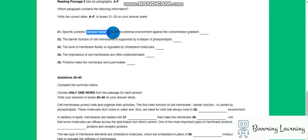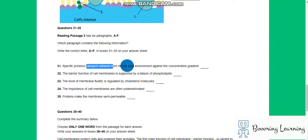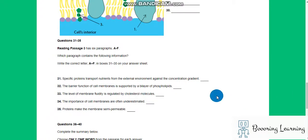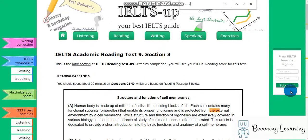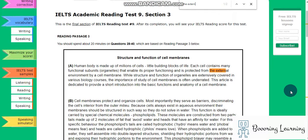Specific protein transport nutrients from the external environment against the concentration gradient. Okay, it looks very complicated but actually it is easier because they can paraphrase external environment and are hard to paraphrase those against concentration gradient as well. So we just have to find the external, external, okay.